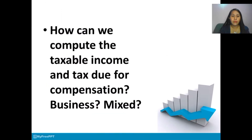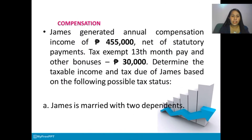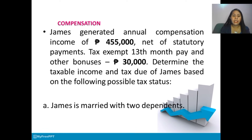How can we compute the taxable income and tax due for compensation and business income? I'm using some illustrative examples, so let's get into it. The first problem is compensation: James generated an annual compensation of 455,000 net of statutory payments, 13th month pay and other bonuses of 30,000. Determine the taxable income and tax due of James based on the following possible tax status.